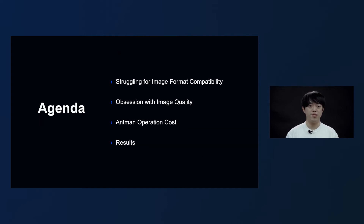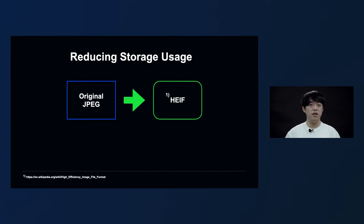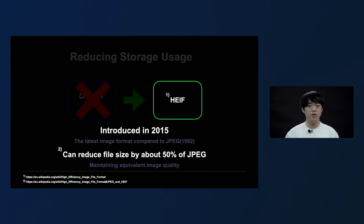Now let me talk about Antman and the problems we faced while developing it, and share the results we achieved. The first topic has to do with image format compatibility. Antman converts the originally saved JPEG file to a HEIF file to save storage, and it frees up storage space by deleting the original JPEG file. The HEIF file is an image format that was introduced relatively recently, so it can be viewed normally only on some devices.